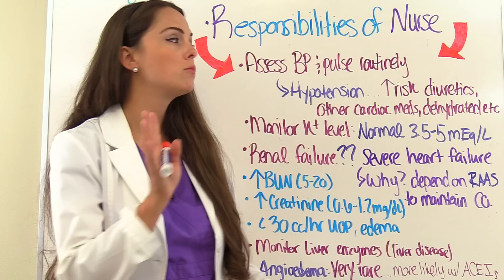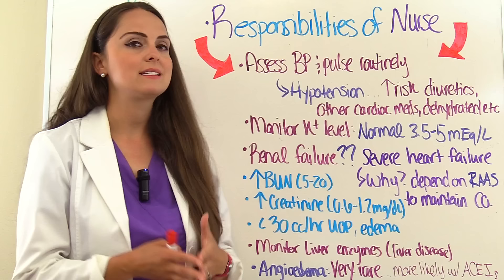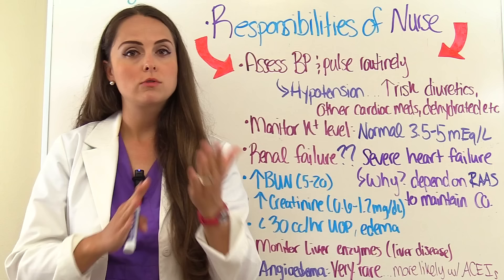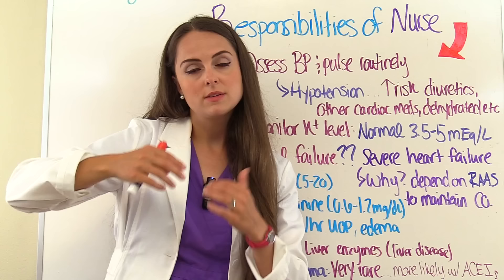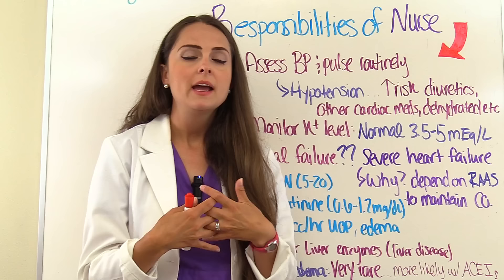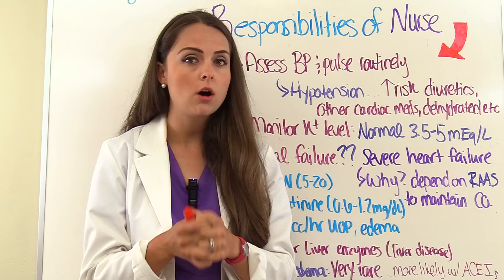Next, monitor potassium levels. Because we're reversing how aldosterone works, the kidneys excrete sodium and water but retain potassium, so potassium levels can become elevated in some patients. This is especially important to watch in patients with diabetic nephropathy, where kidney function is already compromised. A normal potassium level is 3.5 to 5 milliequivalents per liter.